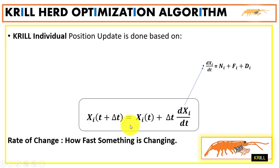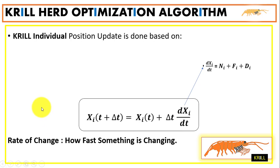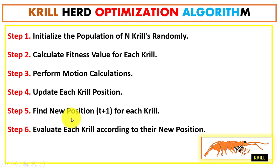To update each krill's position, we use an equation based on the Lagrangian model. We apply the derivative — the rate of change — which tells us how fast the position of the krills is changing. Using this equation, we can update the position of each krill.